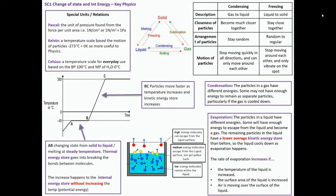This is Topic 5C, Part 1, Change of State and Internal Energy for the IGCSE syllabus. We've got some special units. We're looking at 1 newton per meter squared is 1 Pascal. The Kelvin scale is a temperature scale based on the motion of particles. Minus 273 degrees C is 0 Kelvin. It's much more useful to physics than just having the standard 0 to 100 Celsius scale, which is based on the boiling point of water and the melting point of water. This one is when all the particles will stop moving.